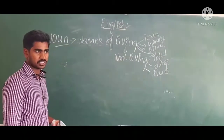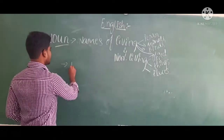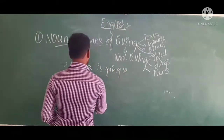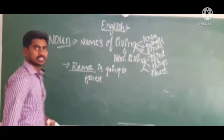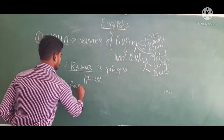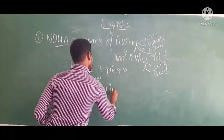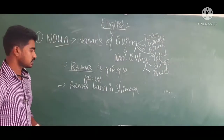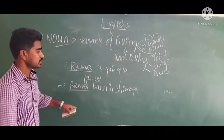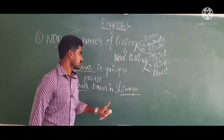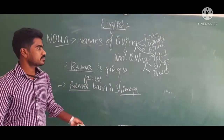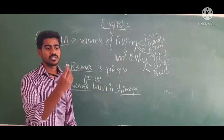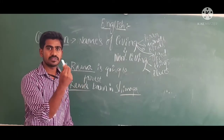For example: this is a duster — this is also the name of a thing or name of an object, so duster is a noun. Chalk piece — this is also the name of an object or name of a thing, so that is also a noun. So the name of a place, person, animals, birds, and objects and things — these are all called nouns.